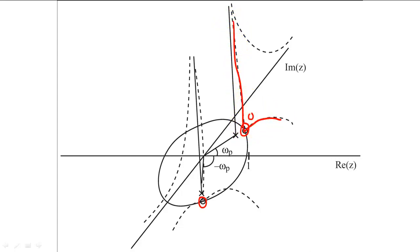Therefore, from this plot, we know that the magnitude of the frequency response will be zero at negative omega p and omega p. We can also guess that the magnitude of the frequency response will be greater at frequencies that are far away from the zeros.